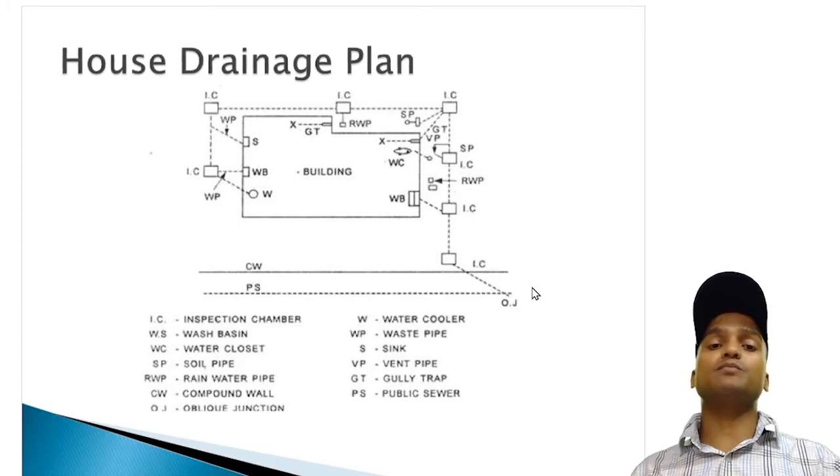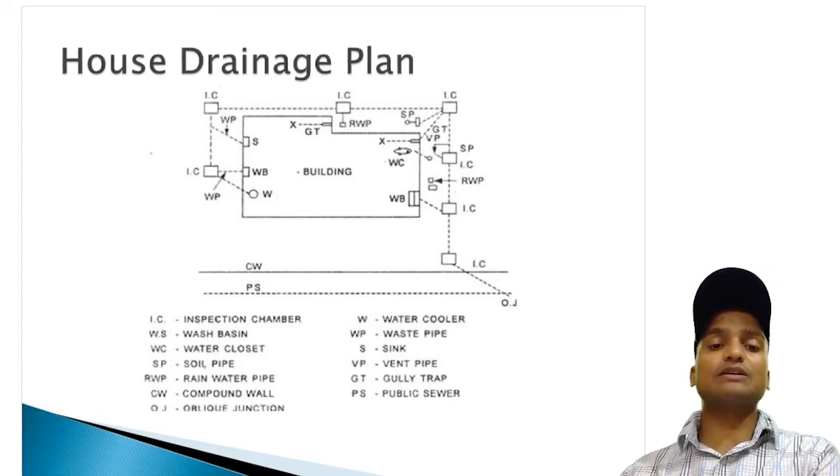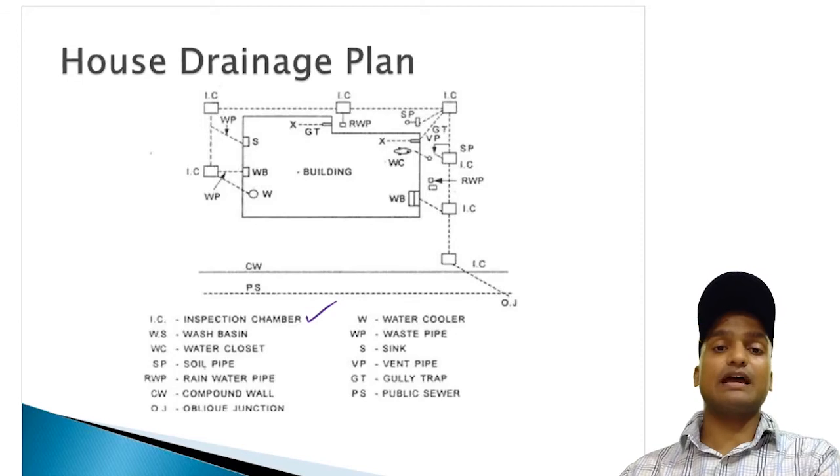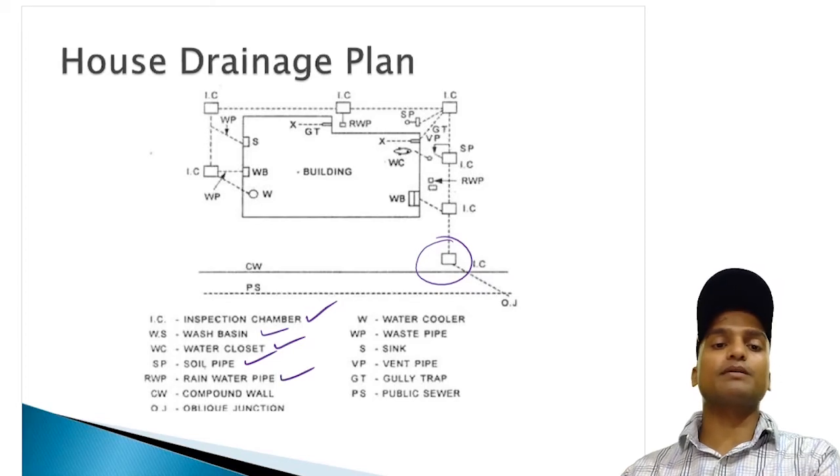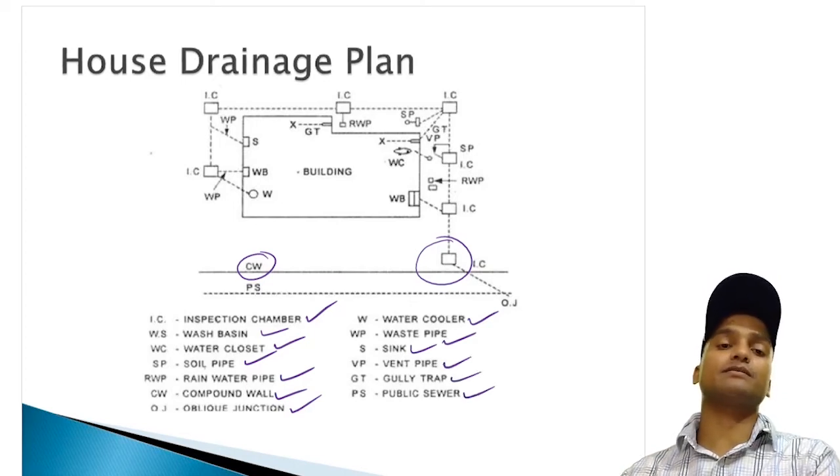Which kind of plumbing system we are going to use and how we are going to discharge our waste water as well as the soil water and how we are going to discharge the rain water and how all the discharges are going to be passed through the municipal drains. All these markings are given on the map. Just like you can see all these indices here like inspection chamber, this is the IC or the manhole, wash basins, water closets, soil pipe, rainwater pipe, compound wall, water cooler, waste pipe, sink, vent pipe, gully trap, public sewer.